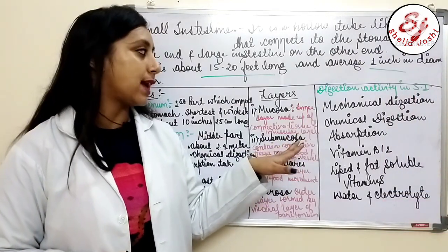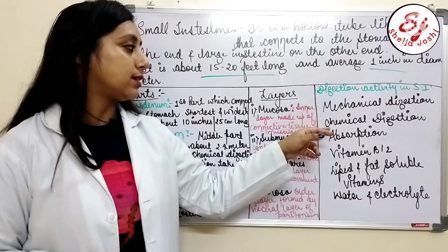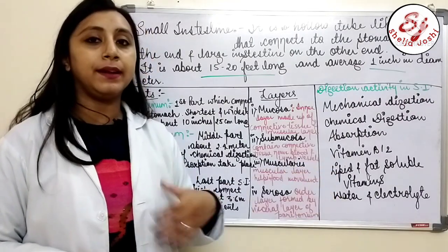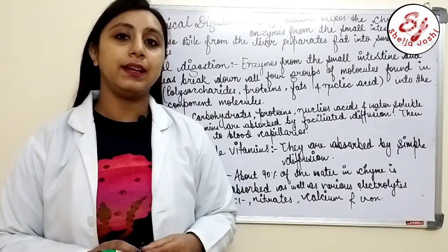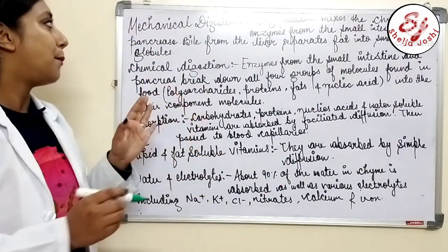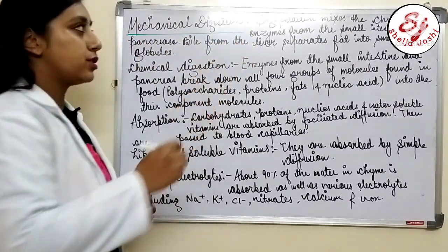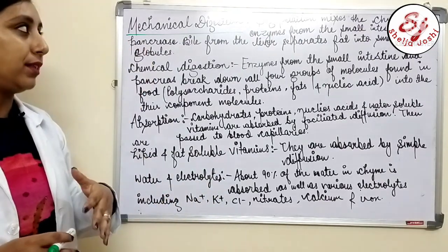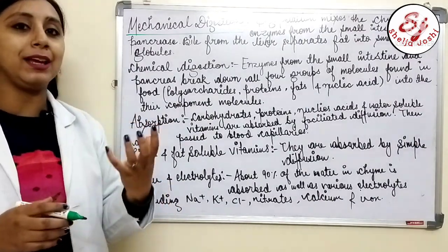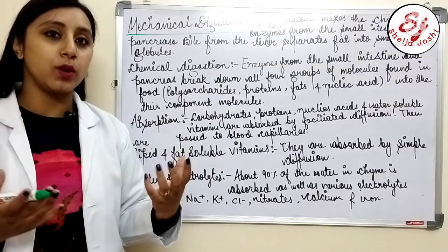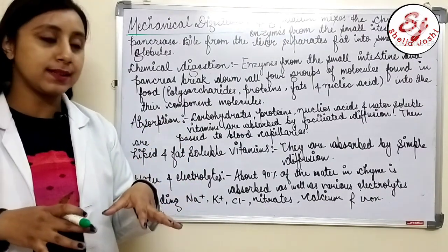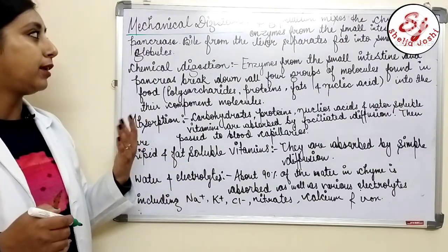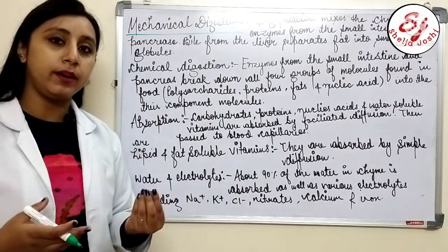The digestion activities in the small intestine include mechanical digestion, chemical digestion, absorption, vitamin B12, lipid and fat-soluble vitamins, and water and electrolytes. In mechanical digestion, segmentation mixes the chyme with enzymes from the small intestine as well as from the pancreas. Chyme is the food that has been digested and converted into fluid form. Bile also separates fat into smaller fat globules.